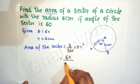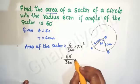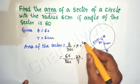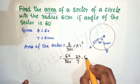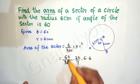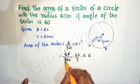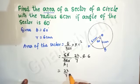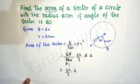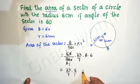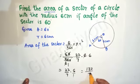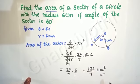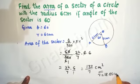Let us substitute the values: area = (60/360) × (22/7) × 6 × 6. Simplifying: 60/360 cancels to 1/6, and 6 × 6 = 36, so 36/6 = 6. This leaves 22/7 × 6 = 132/7 square centimeters. Dividing gives approximately 18.85 square centimeters.